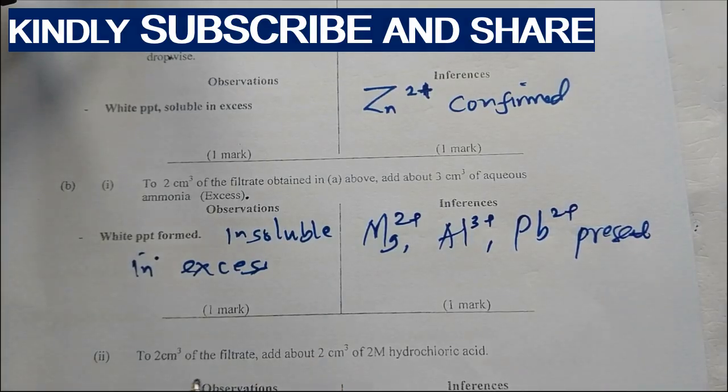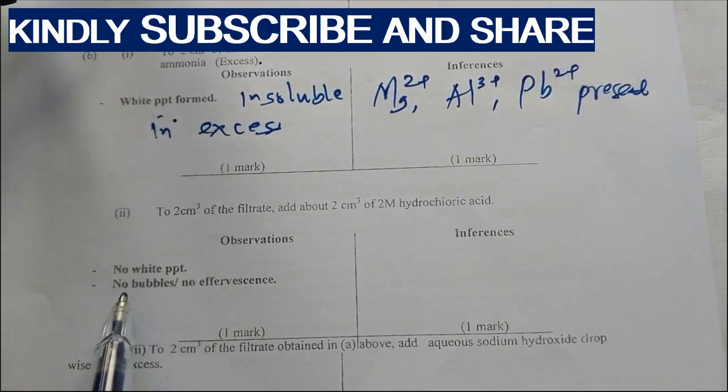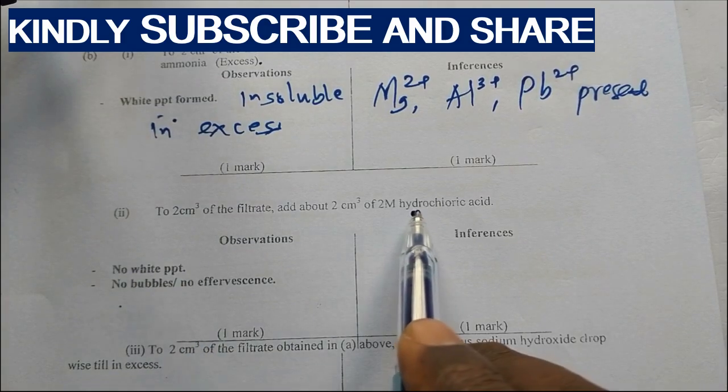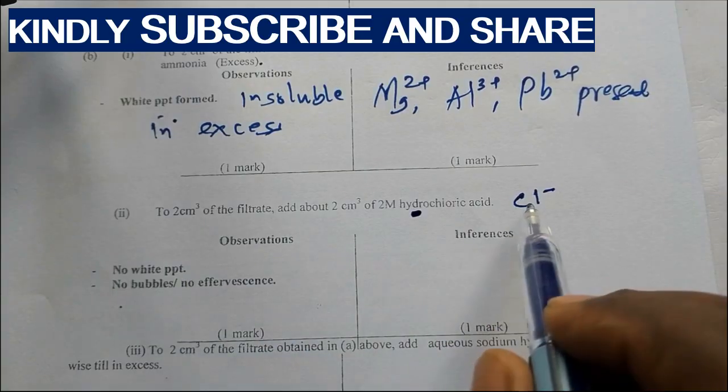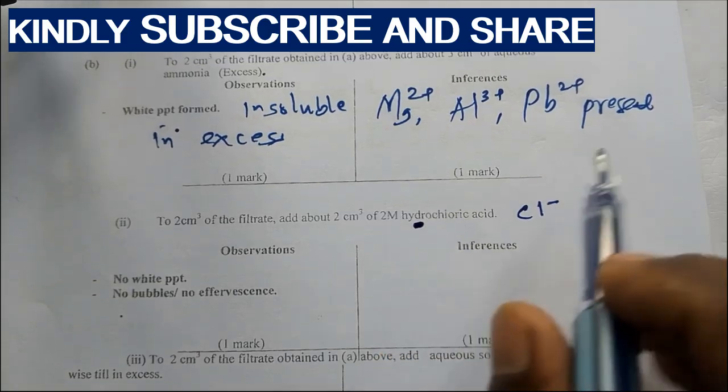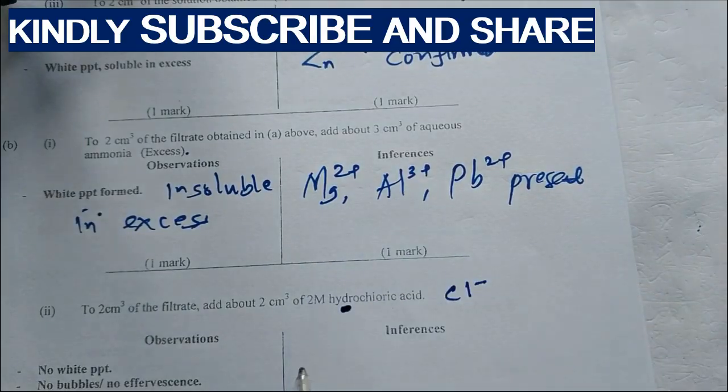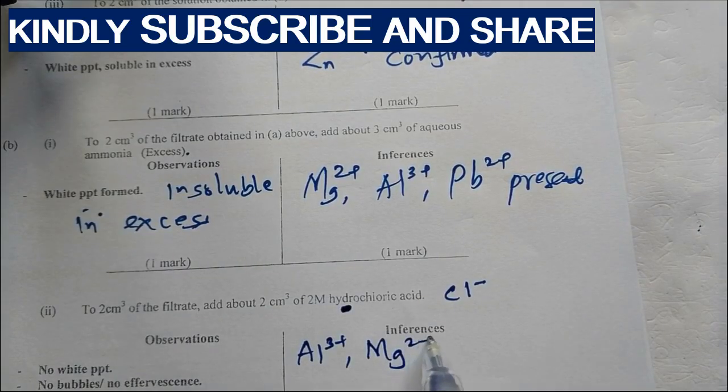To the second portion of the filtrate, add 2 cm³ of 2 molar hydrochloric acid. So there is no white PPT, no effervescence. We expect HCl, the chloride ions inside here, to form a white precipitate with lead. Now that there is no white precipitate, it means that lead is absent. So if lead is absent, then what is present is magnesium and aluminum.